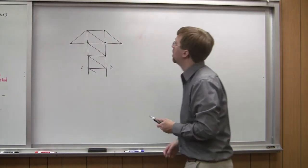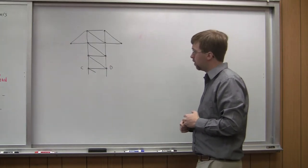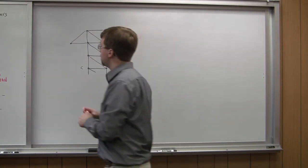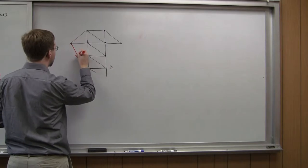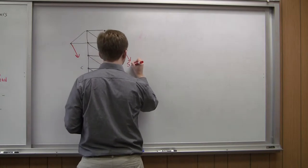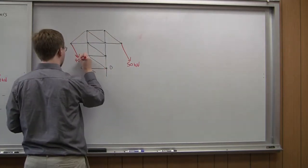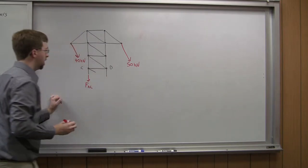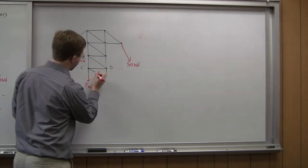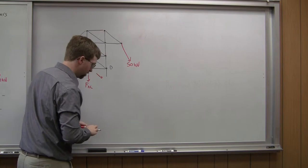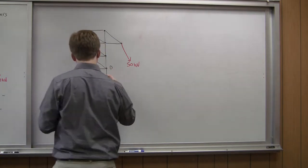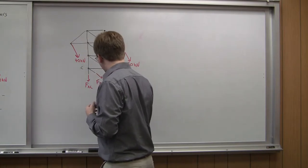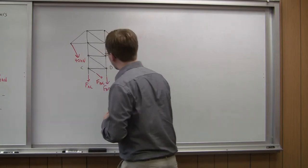I've drawn a diagram of what the top looks like — here's my free body diagram of the top. I need to start adding forces in. I've got the 40 kilonewton force here and the 50 kilonewton force here. Down at the cut I'm going to have FAC — the member going from A to C — going in this direction, FBC, and going straight down, FBD. I'm looking for all three of these.